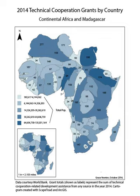Research also shows that aid per capita supports economic growth for low-income African countries such as Tanzania, Mozambique, and Ethiopia, while aid per capita does not have a significant effect on the economic growth of middle-income African countries such as Botswana and Morocco. Aid is most beneficial to low-income countries because such countries use aid received to provide education and health care for citizens, which eventually improves economic growth in the long run.